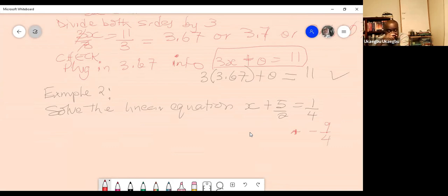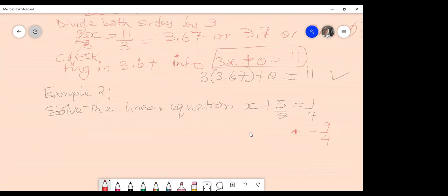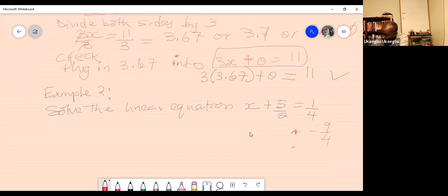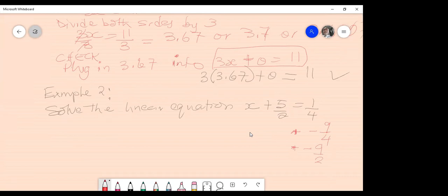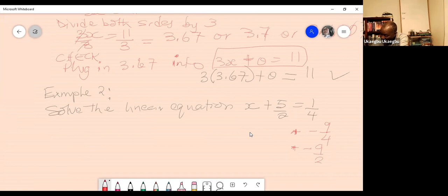Who got something else? Or the same thing? If you got the same thing or something else, speak up. I got negative 9 over 4 too. Okay. Another solution suggested is negative 9 over 2. Okay. No, I said I got negative 9 over 4 as well. Oh, 9 over 4 as well. Okay.